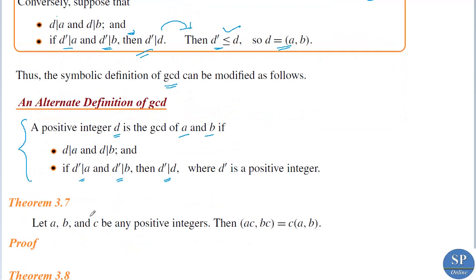We have theorem 3.7: let a, b, and c be any positive integers; then GCD(ac, bc) equals c times GCD(a, b). You can try to prove this — the proof is straightforward and I am leaving it to you.